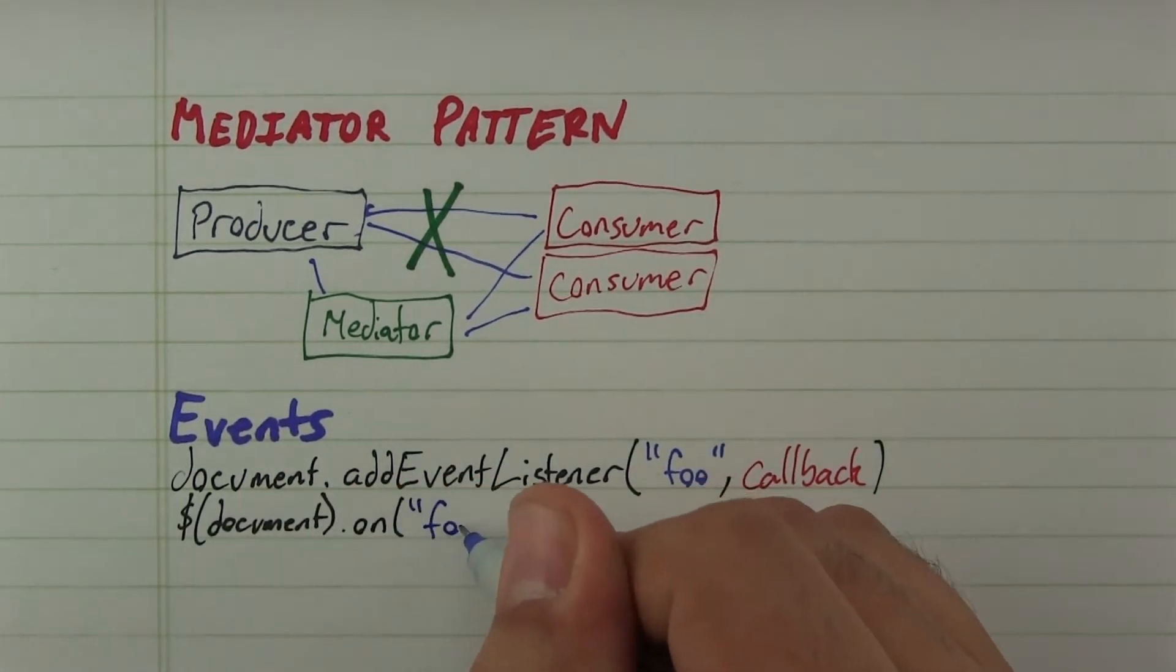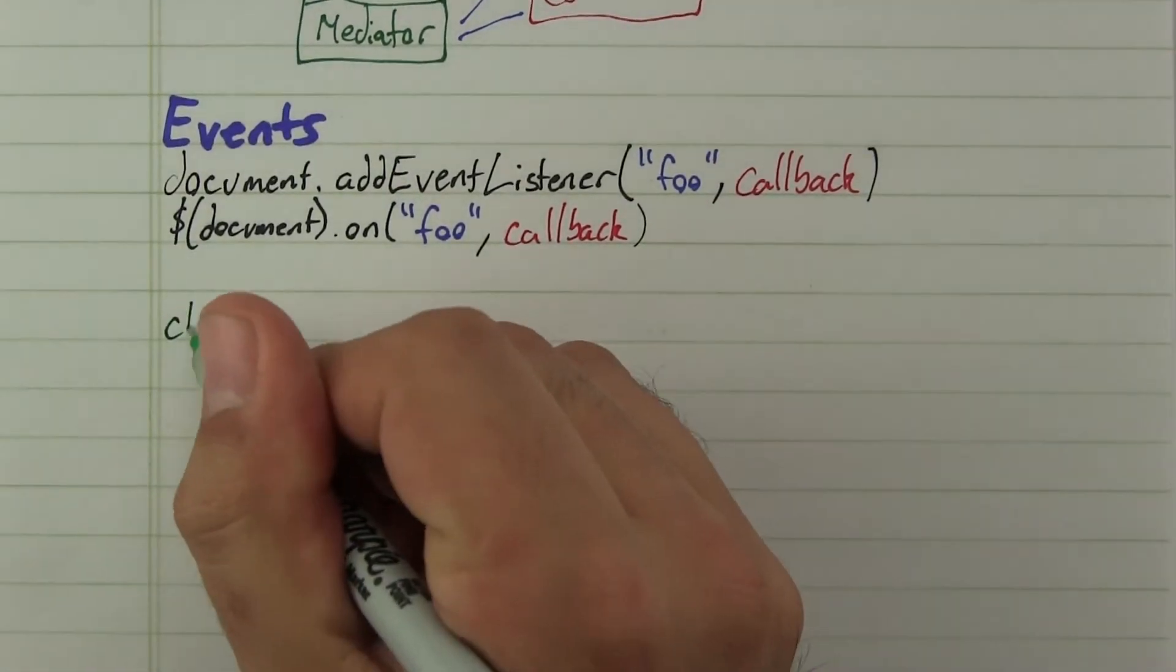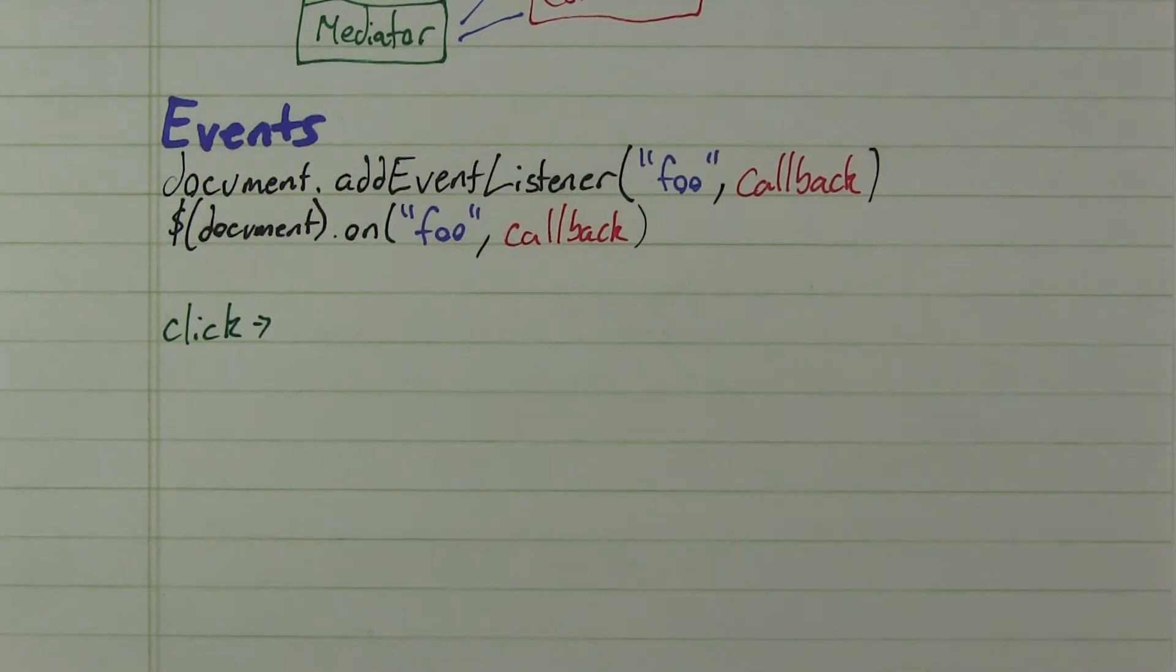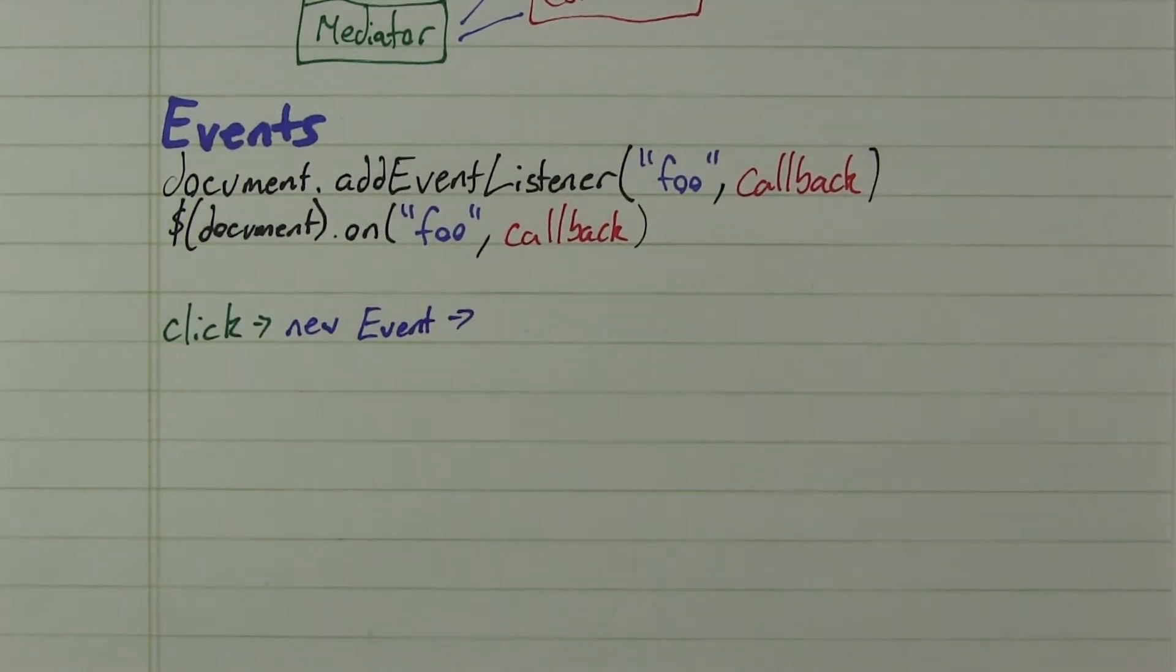When a user clicks a link on a web page, the browser then creates a click event and asks the document to handle it. The document, in this case, is our mediator.